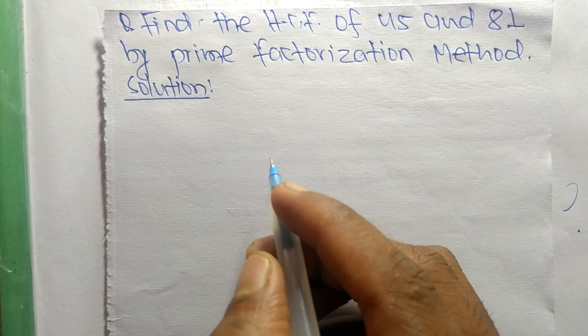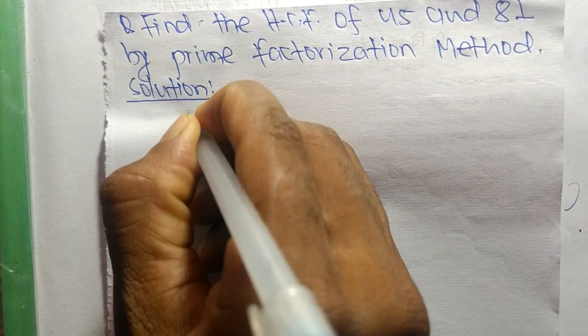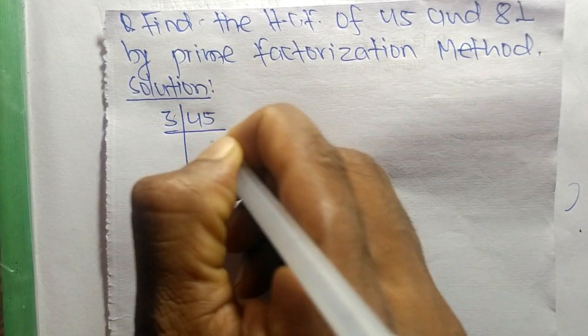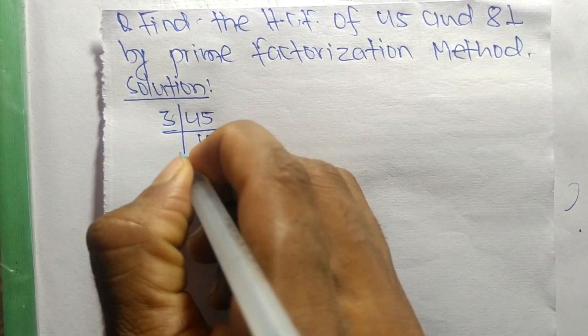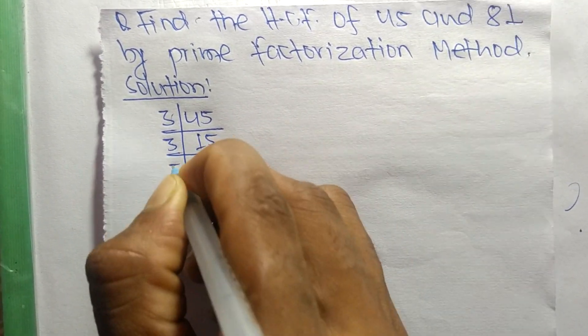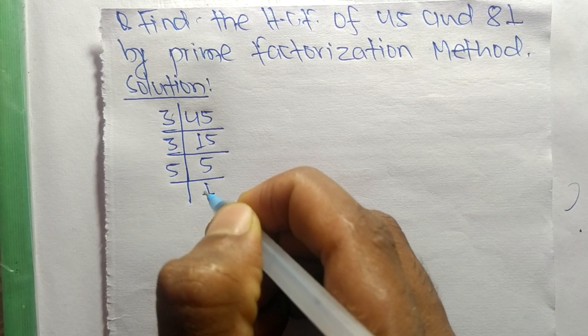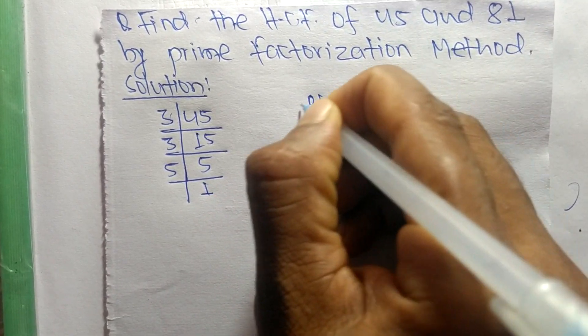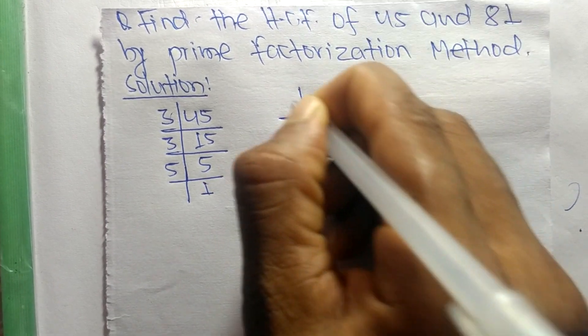First, we find out the prime factors of 45. So it is 3 times 15 equals 45, 3 times 5 equals 15, and 5 times 1 equals 5. Now, the prime factors of 81 are: